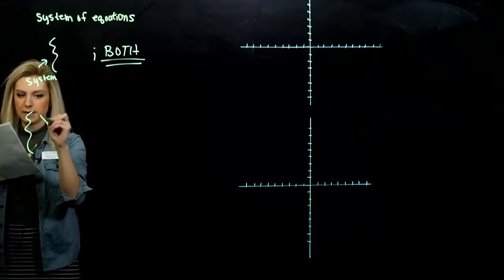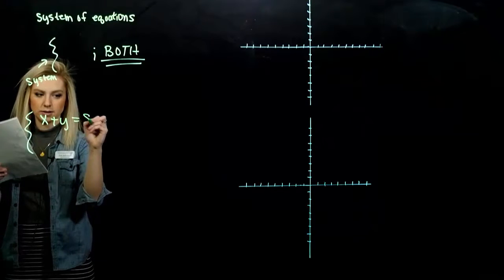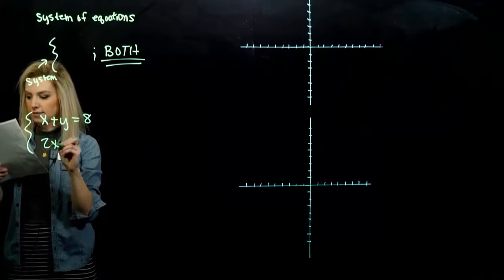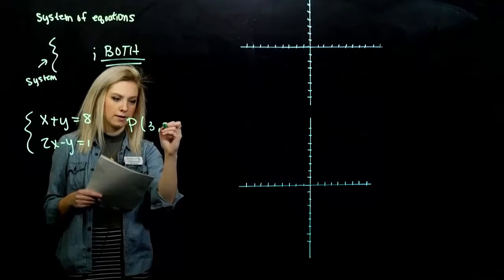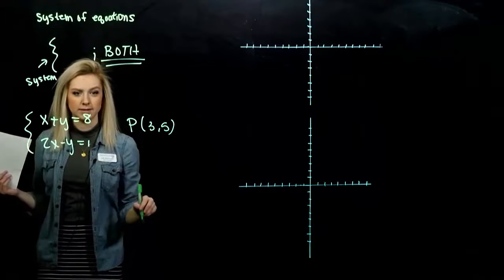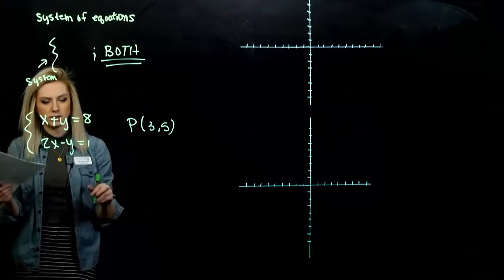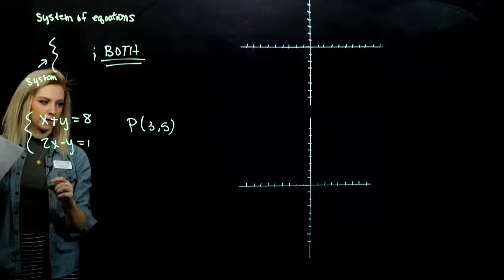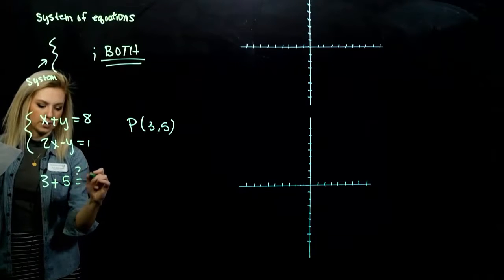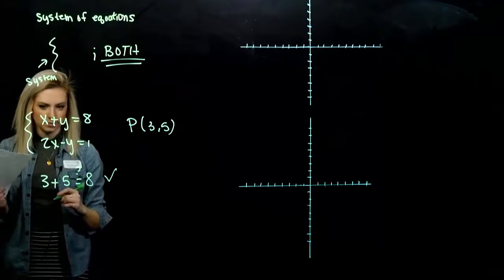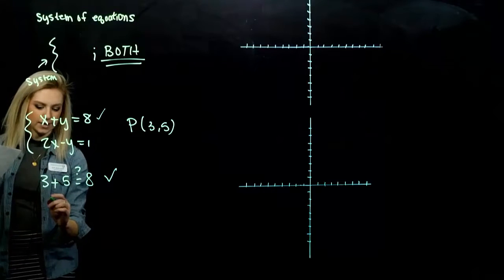A solution of a system of two equations is an ordered pair, since we have both an x and a y, that makes both equations true. Both equations true at the exact same time. So that system, that first one that's given, we have graphed there and they are intersecting at one point P. So we want to just double check, make sure that the picture is accurate and that P is actually a solution to both of those equations at the same time.